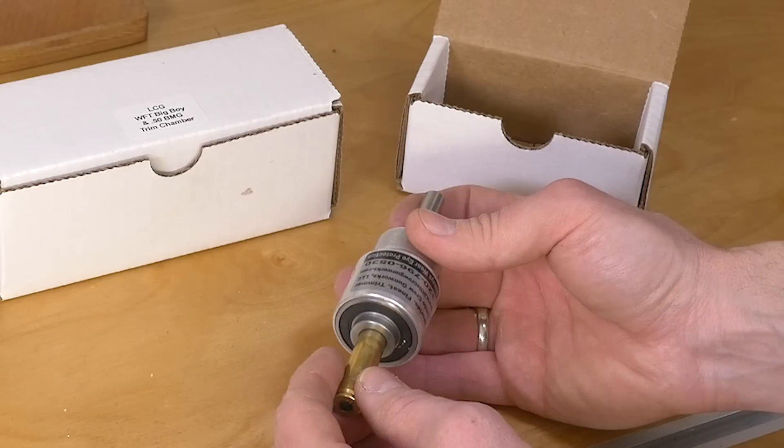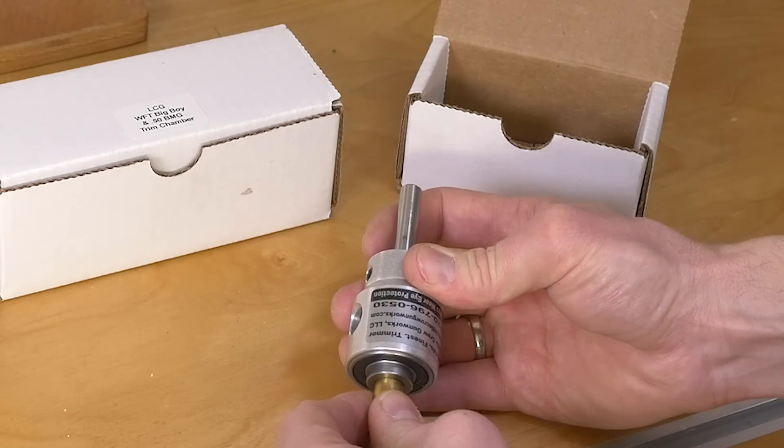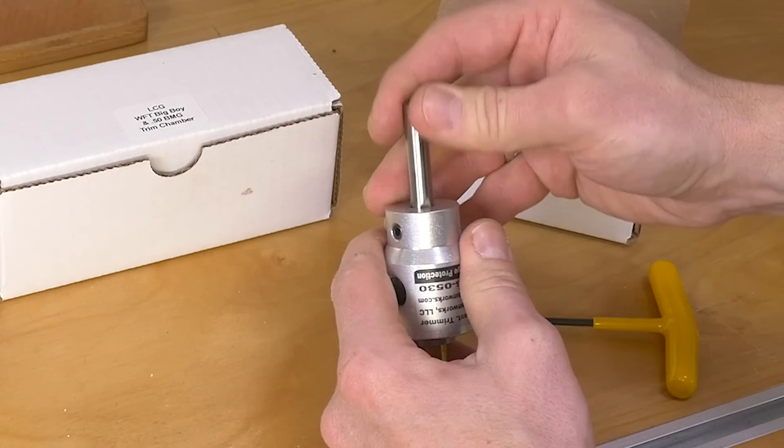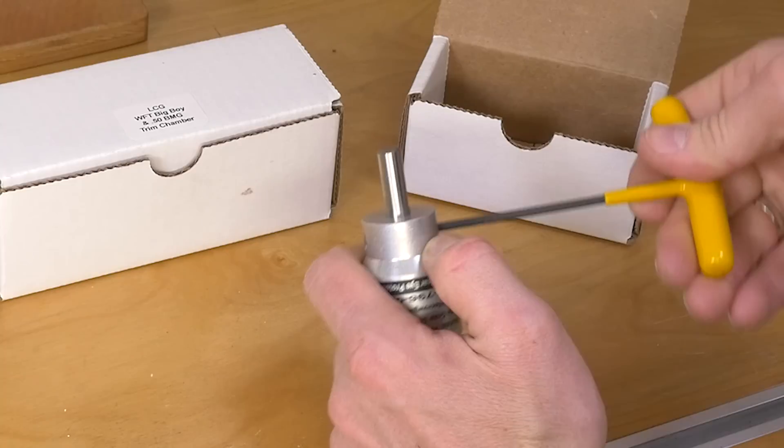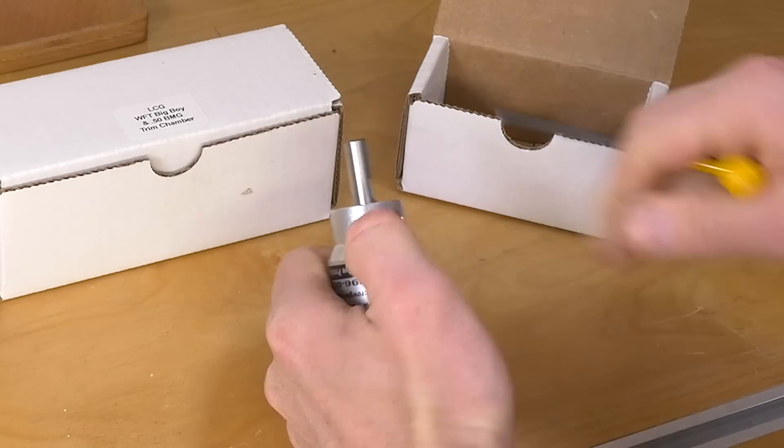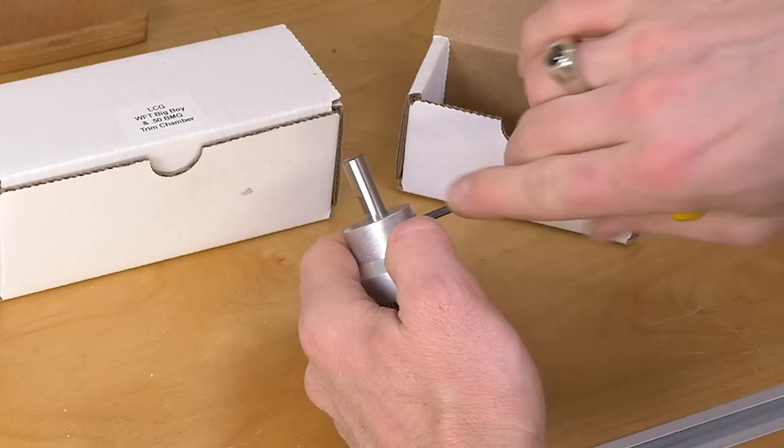What's also nice about this design is if we use our piece of reference brass we can just insert it into the insert and then lower the end mill against that piece of brass. Tighten down the set screws. It doesn't take a whole lot. And then we're basically dialed in.